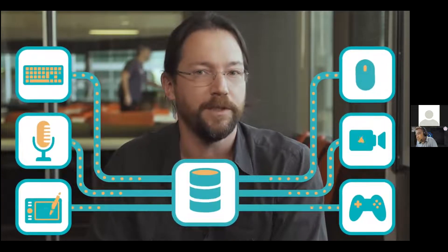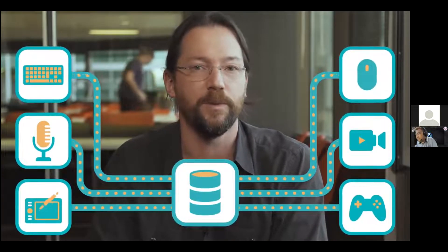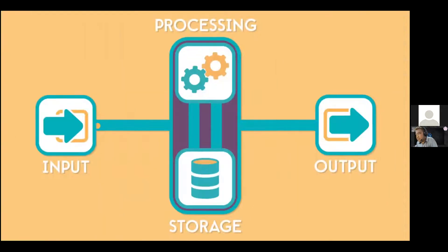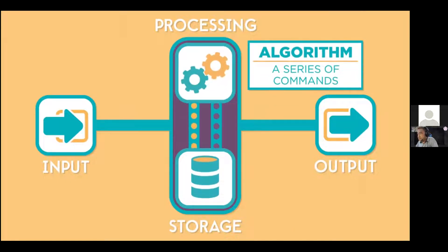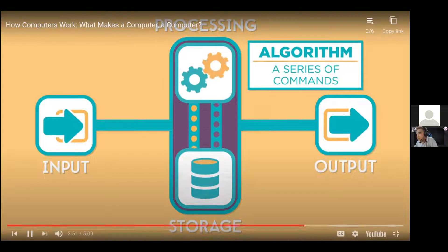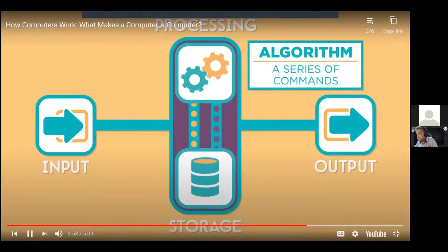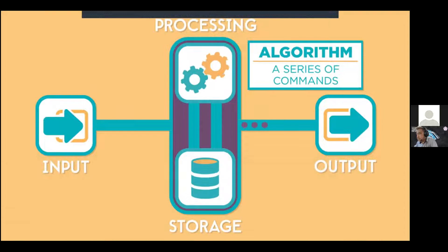All these different inputs give a computer information, which is then stored in memory. A computer's processor takes information from memory, manipulates or changes it using an algorithm — which is just a series of commands — and then sends the processed information back to be stored in memory again. This continues until the processed information is ready to be output.